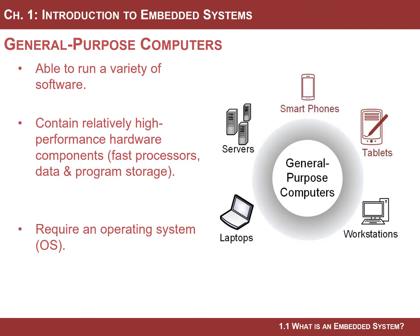General purpose computers are designed to run a wide variety of software — in fact, they're designed to run software that may not even have been created yet. Users are going to be able to install any software they want, uninstall software, and may even be running multiple pieces of software at the same time. As an outcome, the computer hardware must have an abundance of resources to support all these different applications. You're going to need a central processing unit fast enough to handle all these different applications, even if some of them don't need the speed.